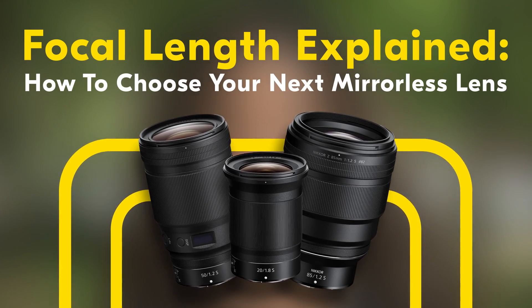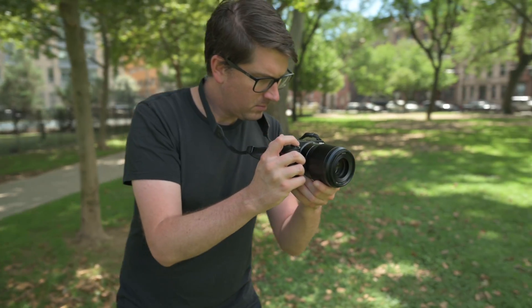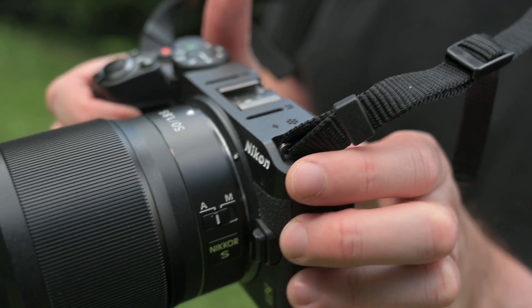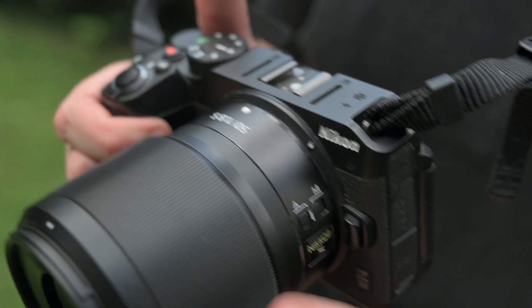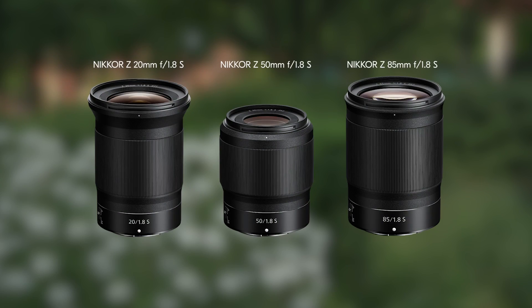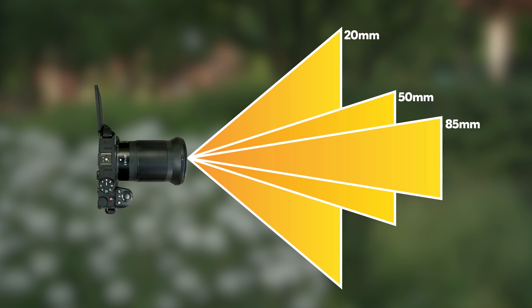Choosing the right mirrorless lens to pair with your Z-series camera can make all the difference in your photos and videos. First, you'll need to choose your preferred focal length. Focal length is measured in millimeters and specifies the angle of view of a scene, as well as the magnification of individual objects in the frame.